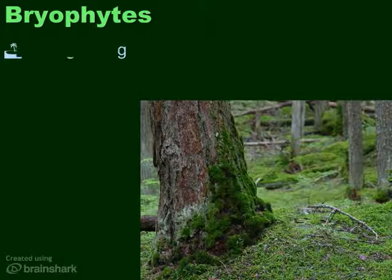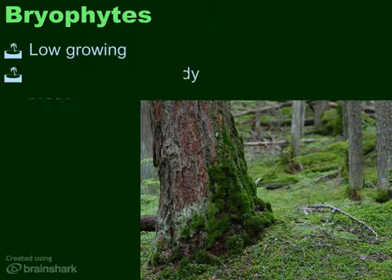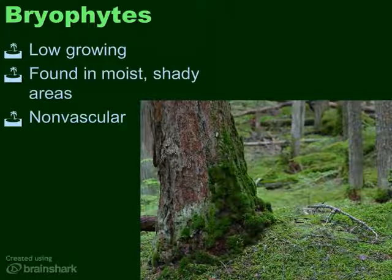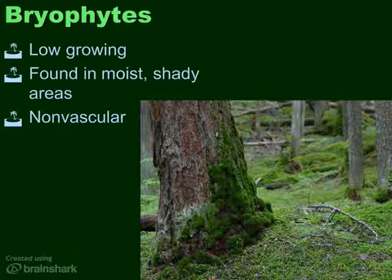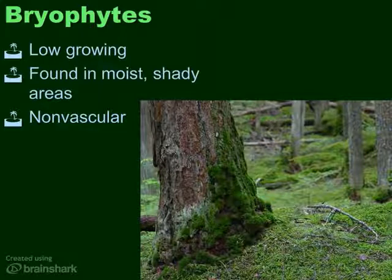Most people don't notice the bryophytes around them, but if you stop and take a look a bit more carefully, you'll see that they're actually very common. Bryophytes are low-growing, usually found in damp, shady places, and they're non-vascular. Non-vascular means they don't have xylem or phloem — they have to acquire water by osmosis, so they need a constant source of water and can't be very far away from it at all.